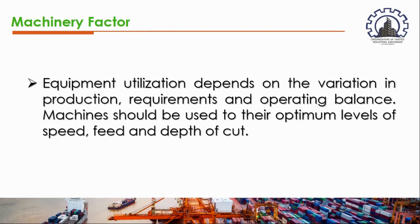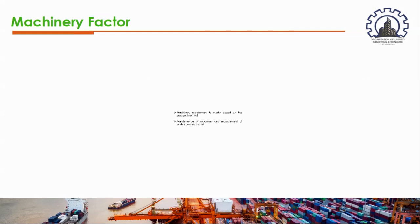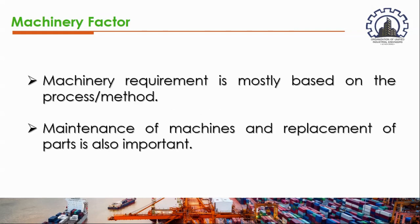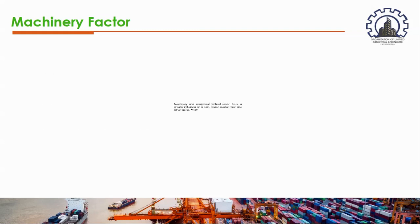Equipment utilization depends on the variation in production requirements and operating balance. Machines should be used to their optimum levels of speed, feed, and depth of cut. Machinery requirements are mostly based on process or method, and maintenance of machinery and replacement of parts is also important.